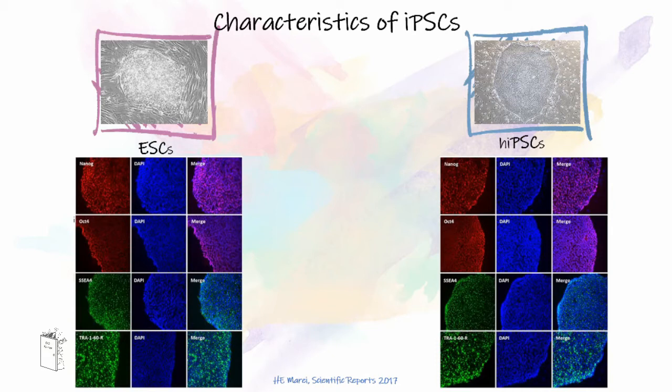Despite these similarities, there has been some controversy regarding the equivalency of human iPS cells to embryonic stem cells. For example, iPS cells carry some point mutations that are not normally seen in embryonic stem cells and appear to be the result of pre-existing mutations in the somatic cells of origin. Whether any of these reprogramming-specific alterations has functional consequences remains to be determined.